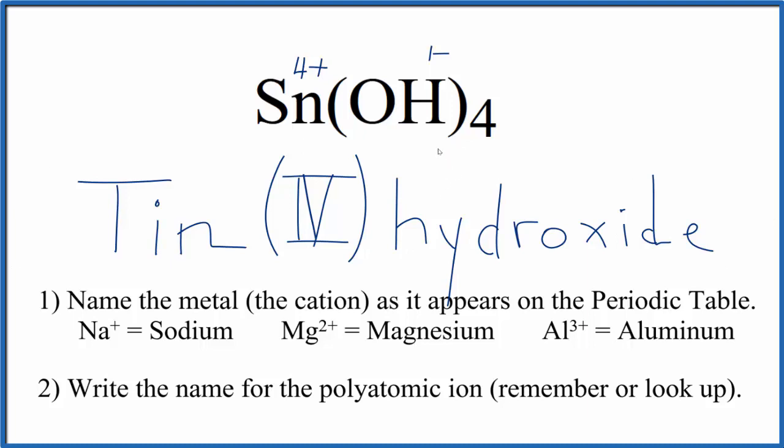If you're given the name and asked to write the formula, you know that tin is 4 plus, so you'll need 4 of these hydroxide ions, each one 1 minus, to get a net charge of 0.